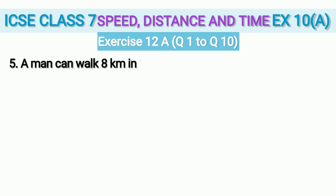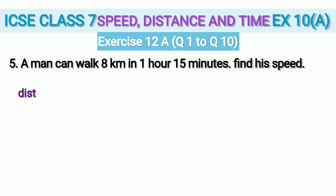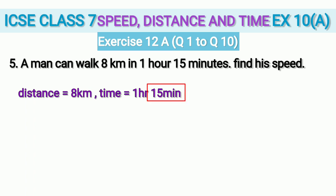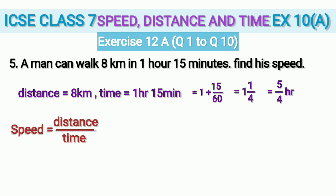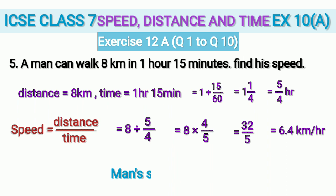Question 5: a man can walk 8 km in 1 hour 15 minutes. Find his speed. Distance is 8 km. We convert 15 minutes to hours: 15/60 = 1/4, so time = 1 + 1/4 = 5/4 hours. Using speed = distance ÷ time: 8 ÷ (5/4) = 8 × 4/5 = 32/5 = 6.4 km/h. So the man's speed is 6.4 km/h.